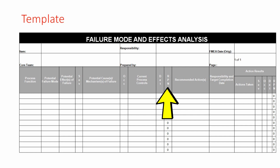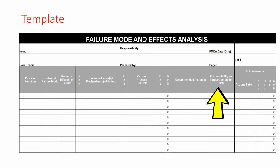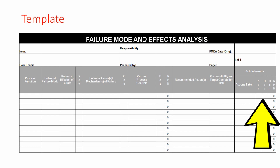Next, calculate the RPN score by multiplying the severity, occurrence, and detection scores. All failure modes with an RPN score greater than 100 should have a recommended action. Those actions should have an assigned responsibility and a target completion date. You should also repeat the same process after three months to review actions taken and check whether severity, occurrence, and detection scores have improved. If the RPN score is now less than 100, the process is good to go. Remember that FMEA is a live document and should be reviewed every three to six months.